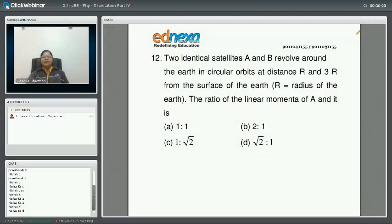Two identical satellites A and B revolve around the Earth in circular orbits at distance R and 3R from the surface of Earth. The ratio of the linear momenta of A and B is